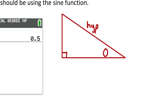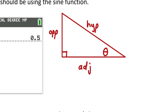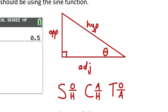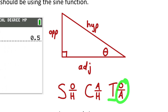If I put the reference angle, angle theta, in the bottom right, the opposite side is the one across the triangle from that reference angle. The adjacent side is the side touching that reference angle but not the hypotenuse. Sine, cosine, and tangent are functions that take this reference angle as an input and output a ratio of a pair of sides. The acronym SOHCAHTOA helps you remember: sine equals opposite over hypotenuse, cosine equals adjacent over hypotenuse, and tangent equals opposite over adjacent.